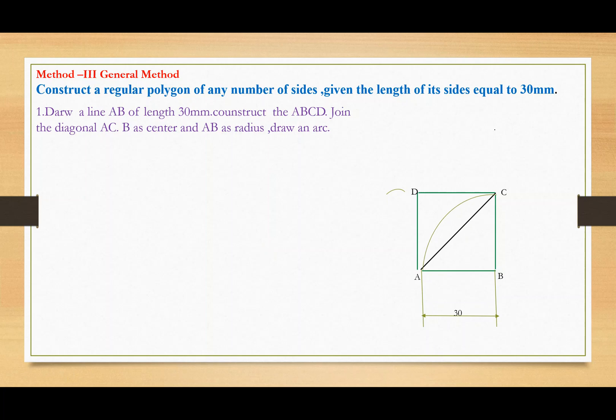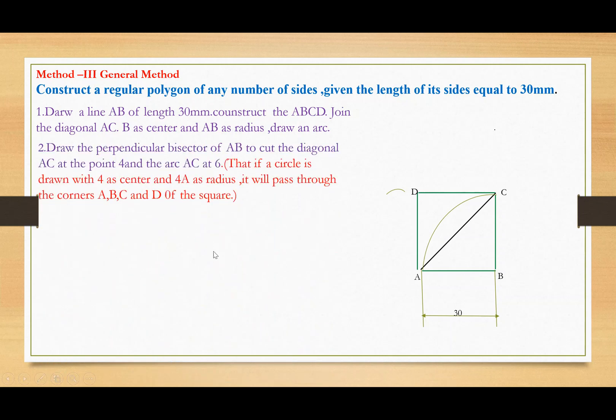Step 2: Draw the perpendicular bisector of AB to cut the diagonal AC at point 4, and the arc AC at point 6. Find the midpoint of AB, and this perpendicular bisector will contact the diagonal AC at point 4 and the arc at point 6.